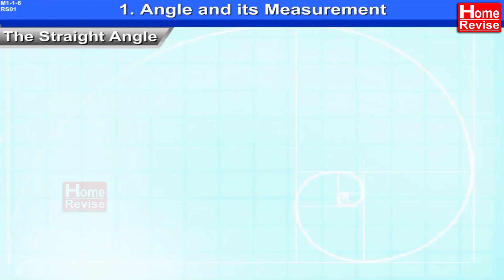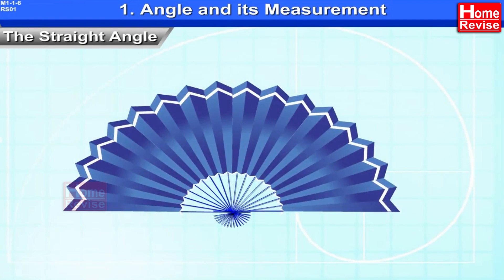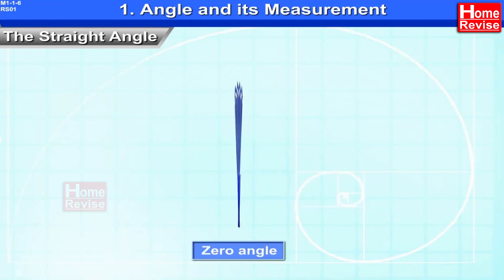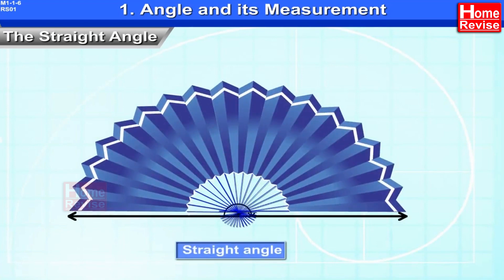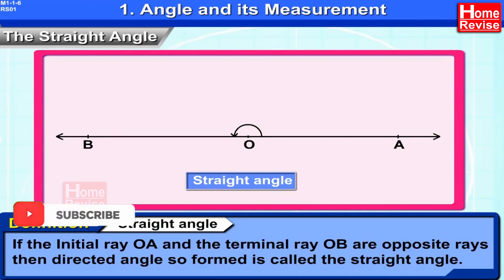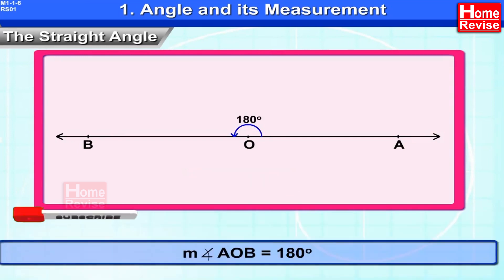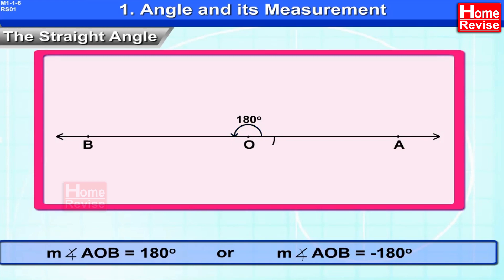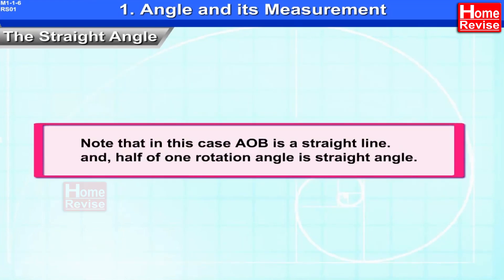2. The Straight Angle. Consider a Japanese fan. When it is closed, the angle is zero. But when you open it, the angle becomes a straight angle. If the initial ray OA and the terminal ray OB are opposite rays, the directed angle so formed is called the straight angle. The measure of directed angle AOB is equal to 180 degrees anticlockwise, or minus 180 degrees clockwise. In this case, AOB is a straight line, and the straight angle is half of one rotation angle.